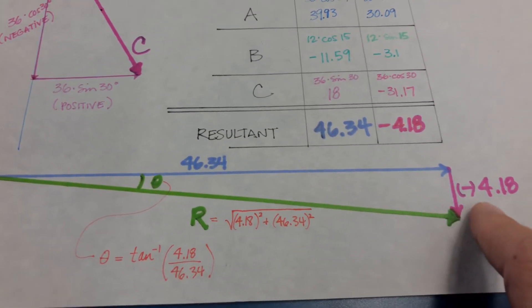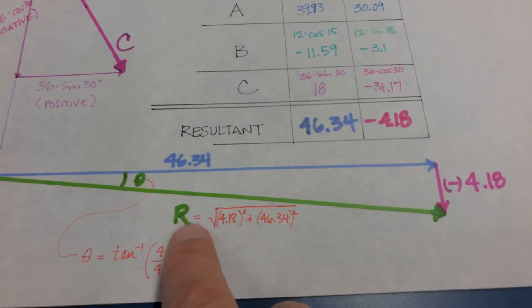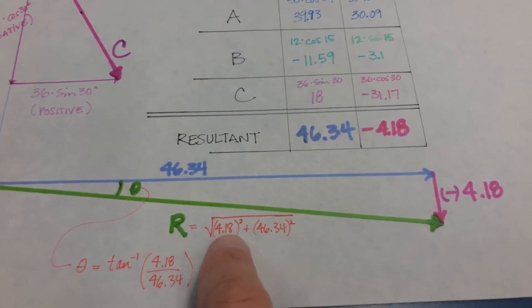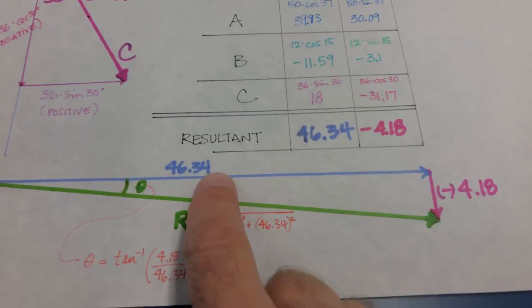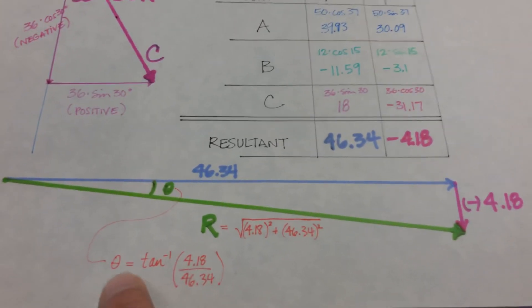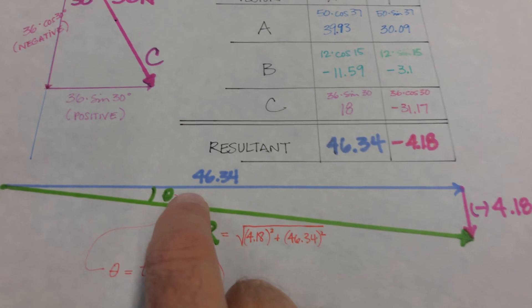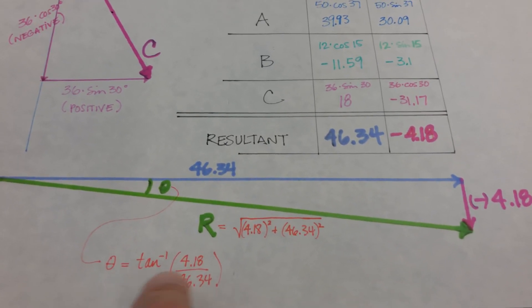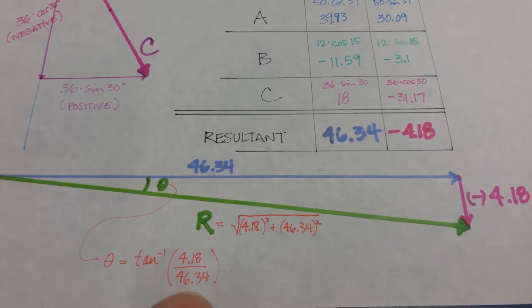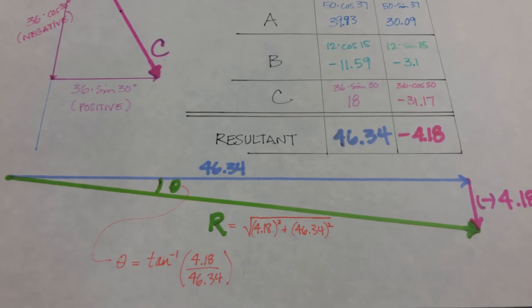Now, our resultant is A squared plus B squared equals C squared, or the square root of this number squared plus this number squared. And then remember the angle. You've got to have the angle in order to have the vector. We have a magnitude and a direction. So the angle is arctangent of opposite over adjacent. And there you go.